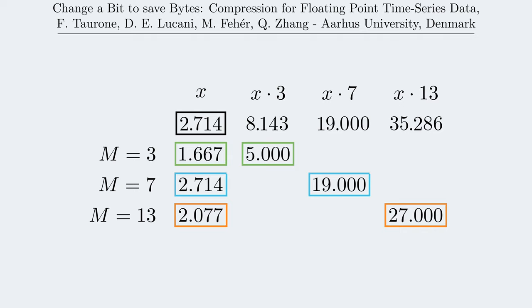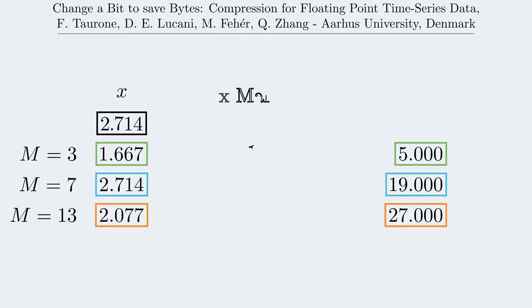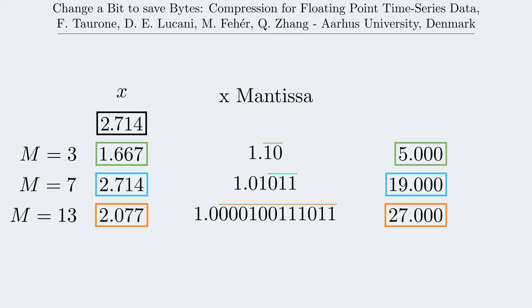This translates into long sequences of zeros in the least significant portion of the mantissa. It turns out that for every factor M, we can compute the pattern in the mantissa that results in zeros after the multiplication.